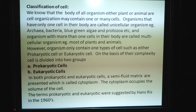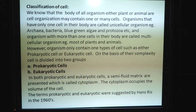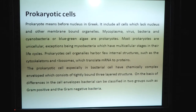Organisms only contain one type of cell, either prokaryotic or eukaryotic. On the basis of their complexity, cells are divided into two groups: prokaryotic cell and eukaryotic cell. In both types, a semi-fluid matrix is present called cytoplasm, which occupies the volume of the cell. The terms prokaryotic and eukaryotic were suggested by Hans Ris in 1916. Prokaryotic means 'before nucleus' in Greek. It includes cells lacking a nucleus and other membrane-bound organelles, such as mycoplasma, virus, bacteria, and cyanobacteria or blue-green algae.